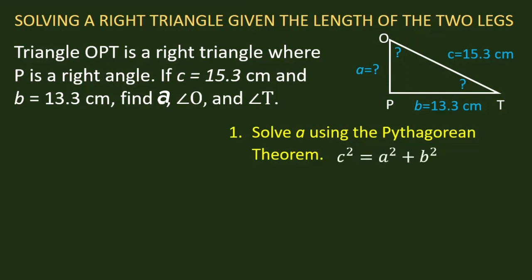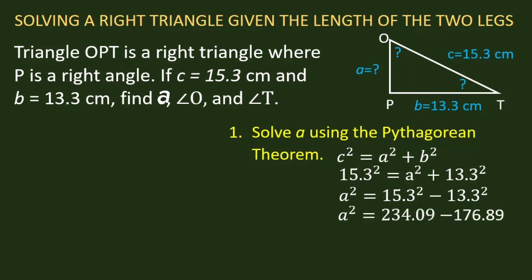c² = a² + b². Substitute b and c: 15.3² = a² + 13.3². Now, a² = 15.3² - 13.3². Solving, we have a² = 234.09 - 176.89 = 57.2. So a = √57.2, and finally a = 7.56 centimeters. Now since we have a, we can solve for the angles.